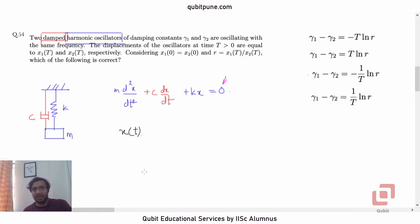But this damping constant γ is actually the ratio of the damping coefficient c and twice the mass of the oscillator. So this is what they have given us. So it might be c₁/(2m₁) for one of the oscillators. And for the other oscillator, it will be c₂/(2m₂).